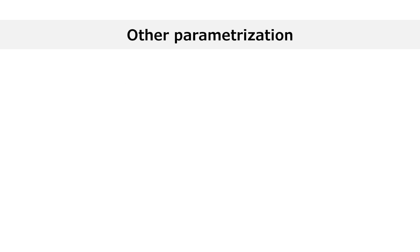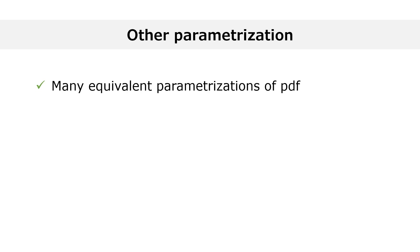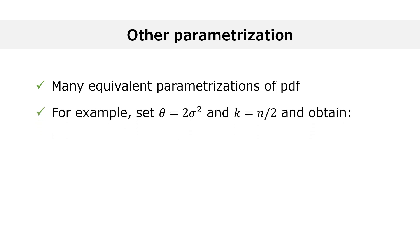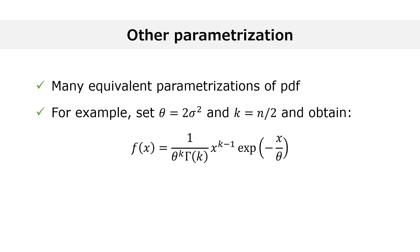There is something important that you need to know: there are several equivalent parametrizations of the gamma distribution. For example, you can take the density function in the previous slide and make the substitutions theta equals 2 times sigma-squared and k equals n divided by 2. What you get as a result is the parametrization shown on this slide, which is one of the two displayed on Wikipedia.